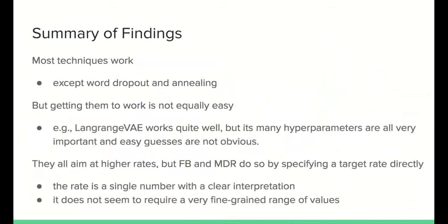We invite you to check our paper and come to the Q&A. Most techniques converge to non-collapsed models with two exceptions: word dropout and KL annealing. Though the others perform similarly, they are not equally easy to get off the floor. One highlight is Lagrange VAE — it performed remarkably well but required a lot of tuning, and for only one of its hyperparameters, namely a feasible ELBO value, an intuitive initial guess is possible. All techniques aim at higher rates, but only 3Bits and MDR do so by specifying a target rate directly, and for that they are quite convenient — they perform well and combine trivially with modifications to the model, such as different priors and likelihoods, and modifications to variational inference, such as changes to the posterior approximation.